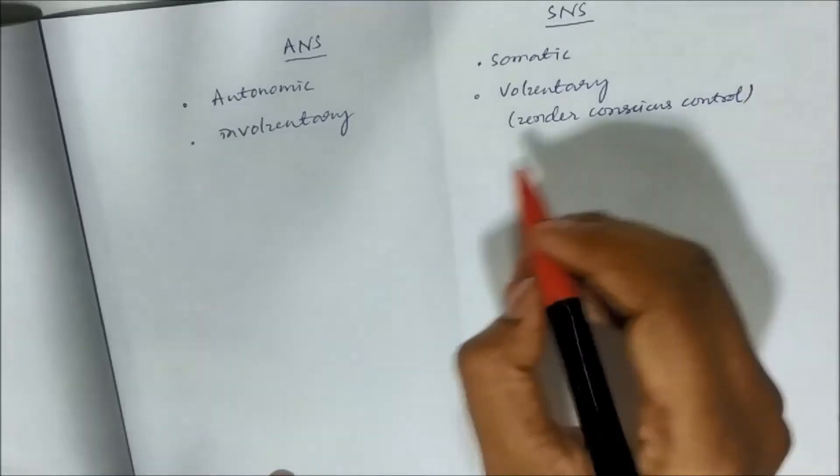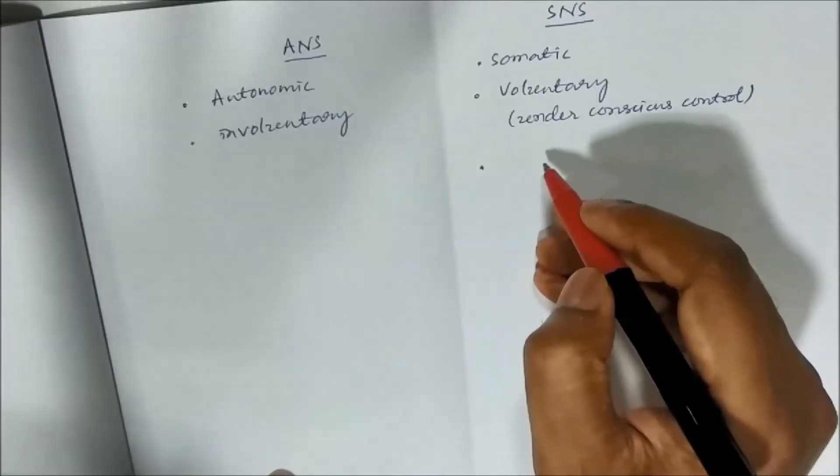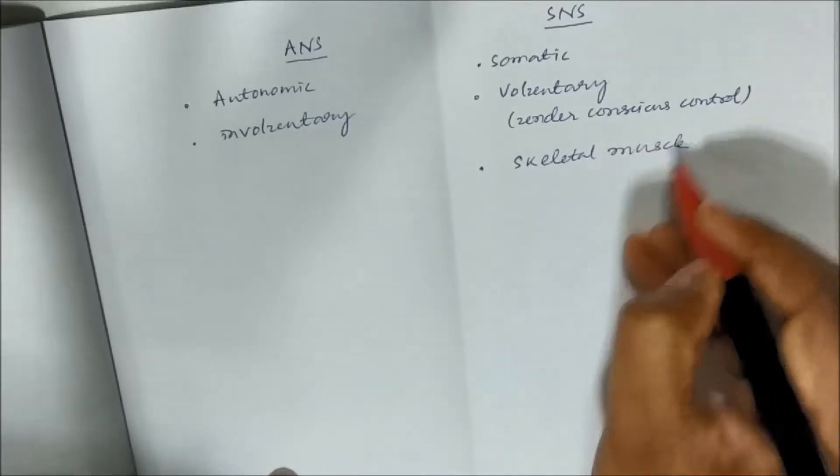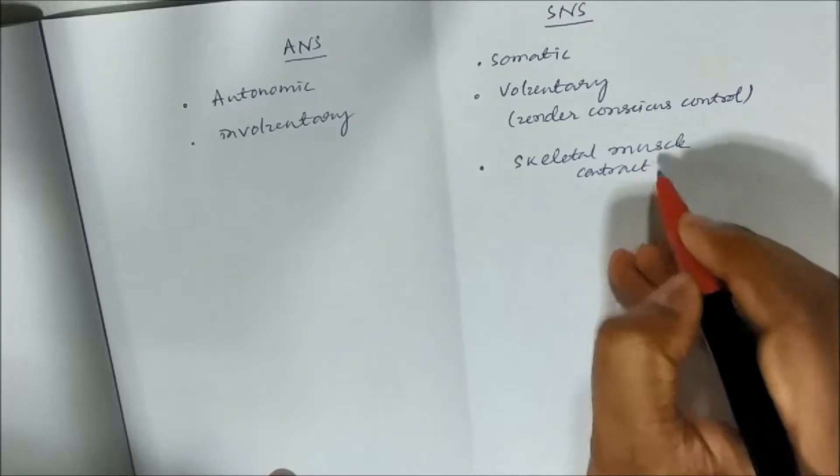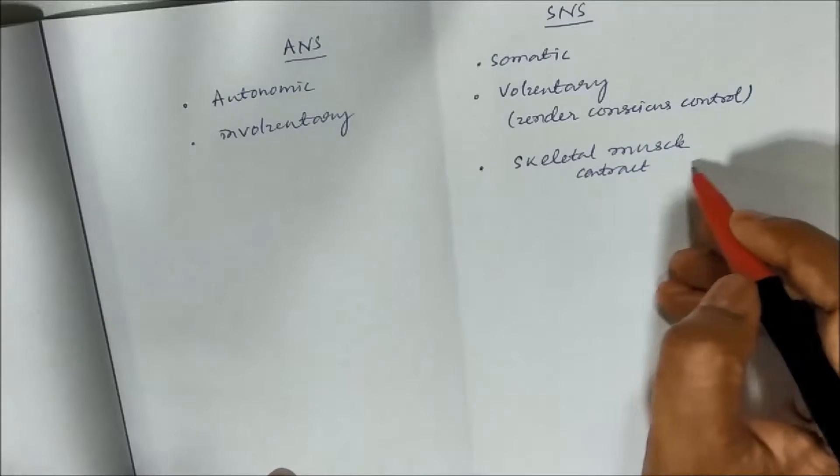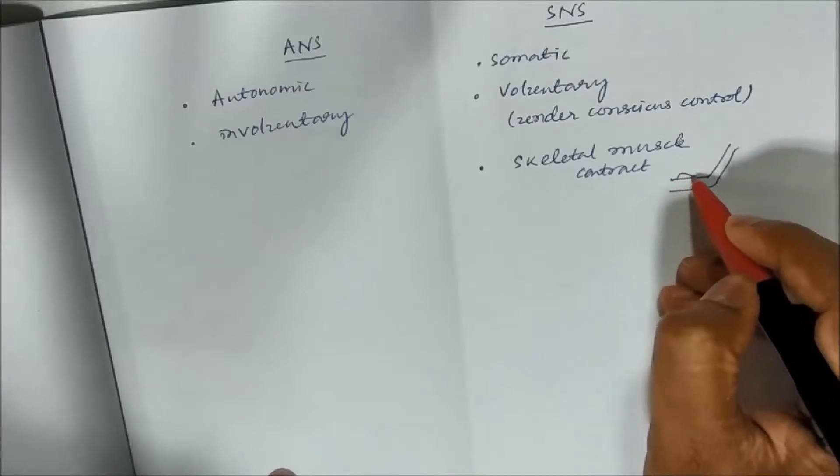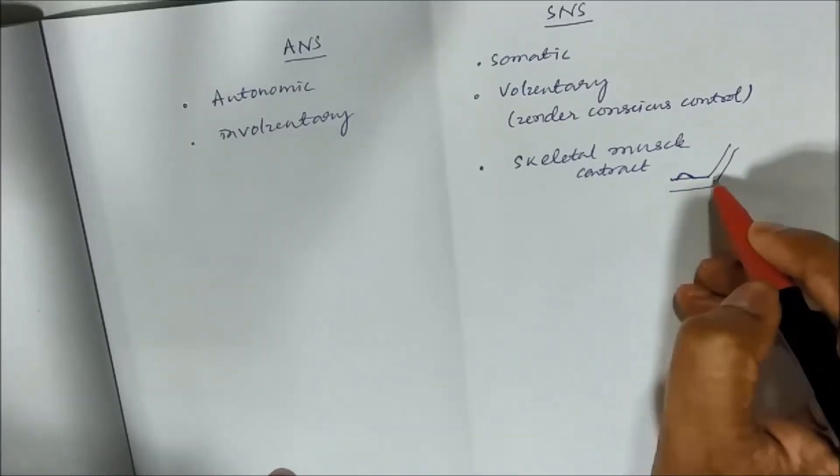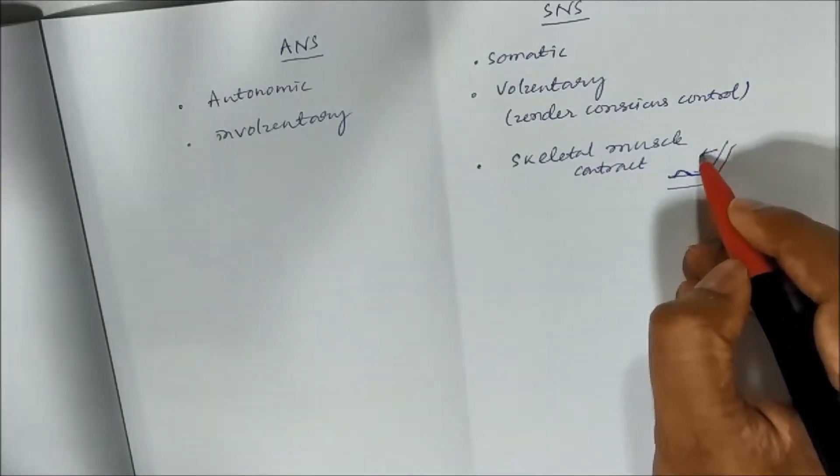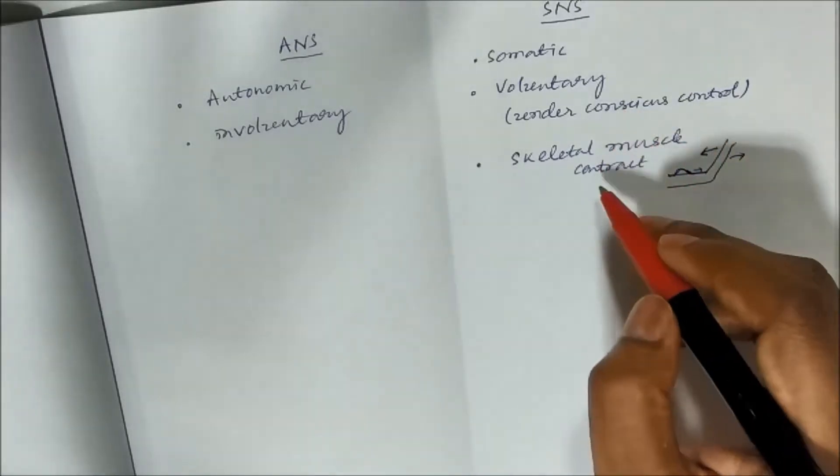For example, we want to contract our biceps. So biceps are skeletal muscles. So skeletal muscle we can contract and this is under our will. We can contract and relax. For example, in this one, if you see the figure, the biceps, this can be contracted as well as relaxed. So this you can do under your will, under conscious control. That is somatic.